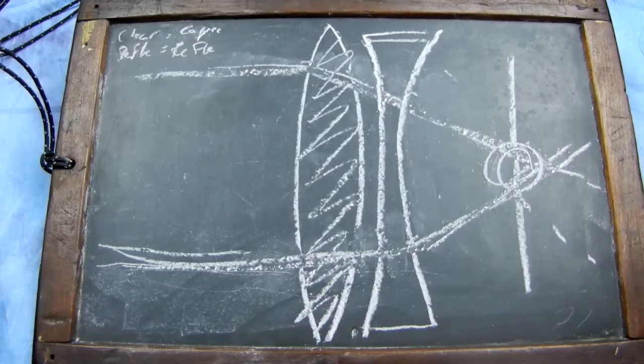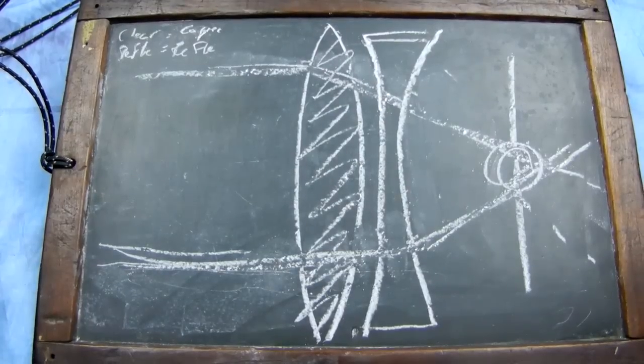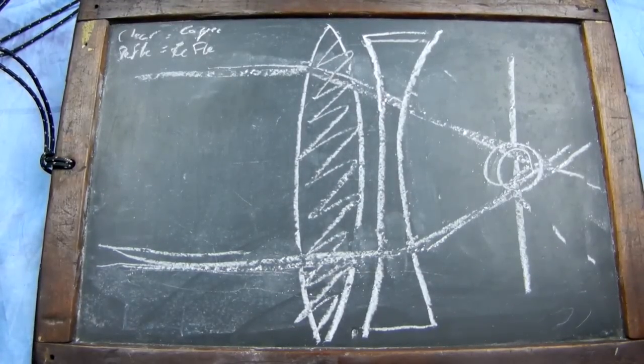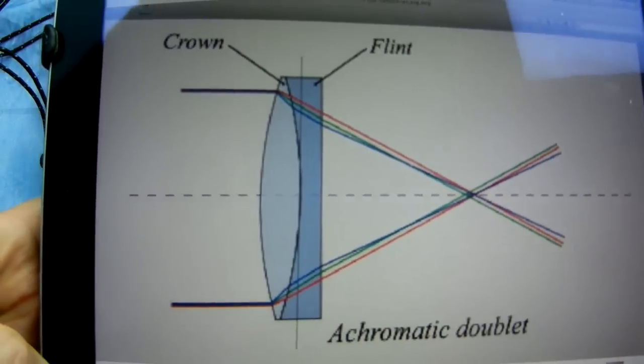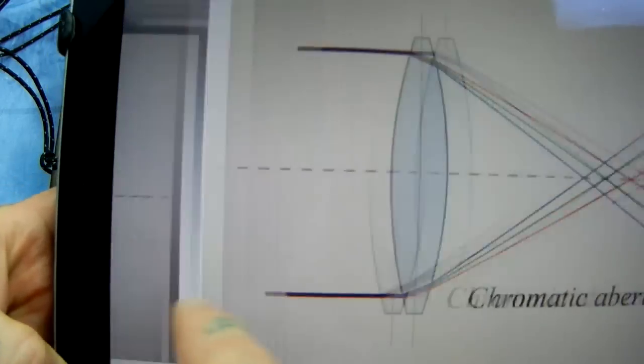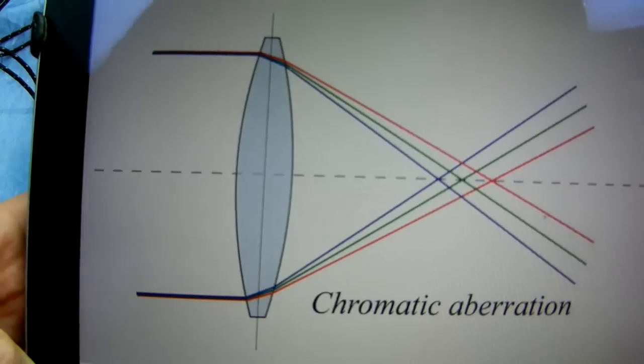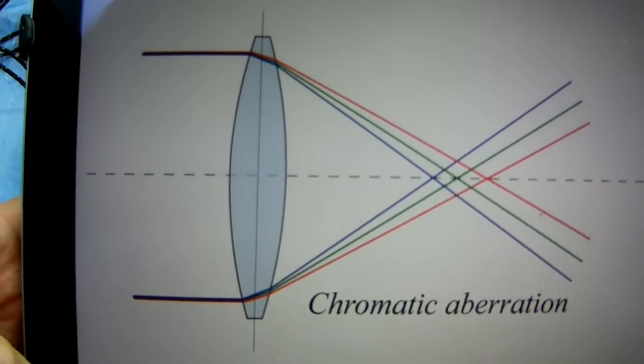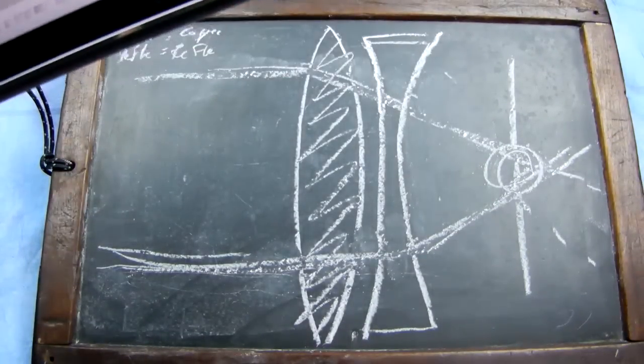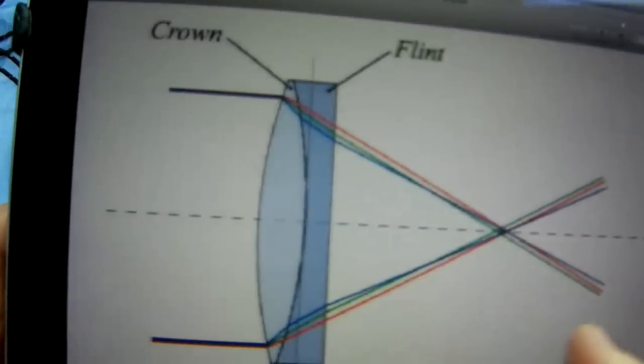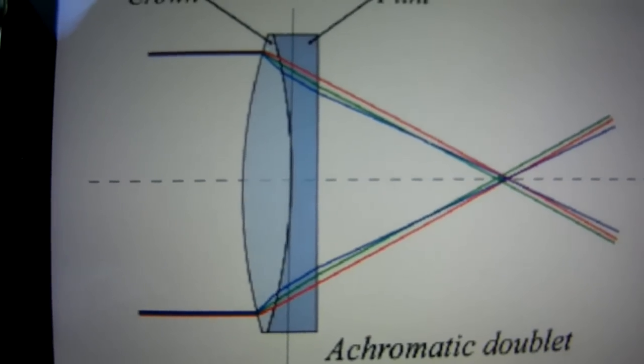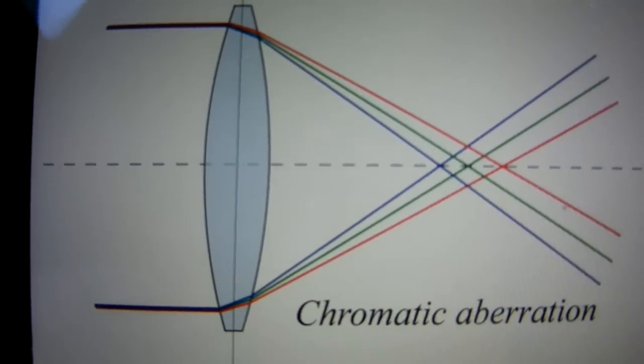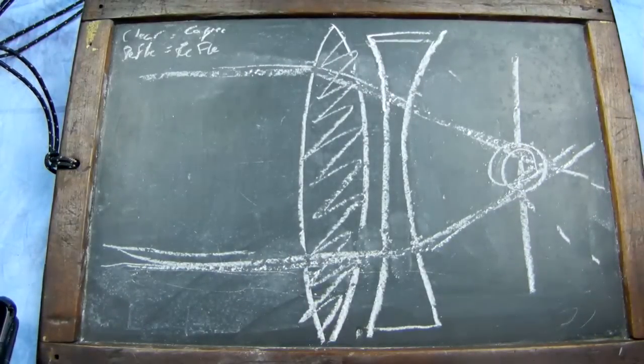But nobody has ever explained to you before what actually causes chromatic aberration. They say, well, it has to do with the refractive index of the lens, which is corrected by a flint element, a corrective secondary achromatic doublet, the secondary element of flint element. But that's a description. That's not explaining what's actually going on. You have to ask yourself, well, you've just described something. These are descriptions. These are not explanations.